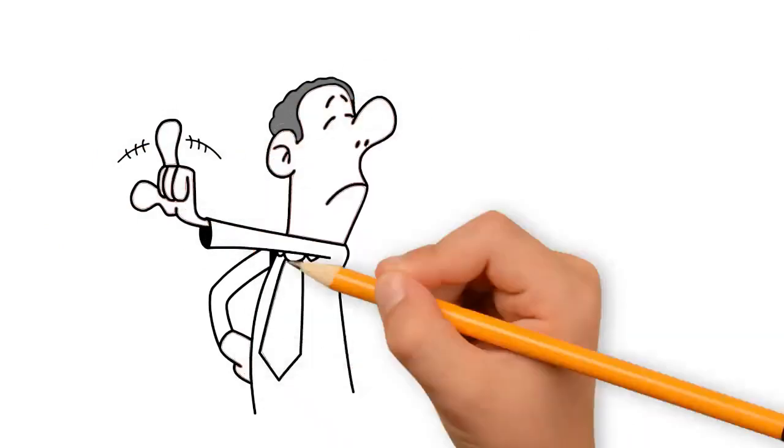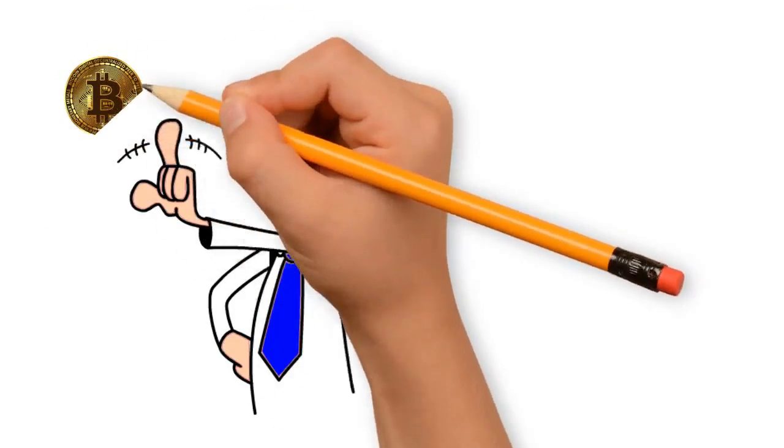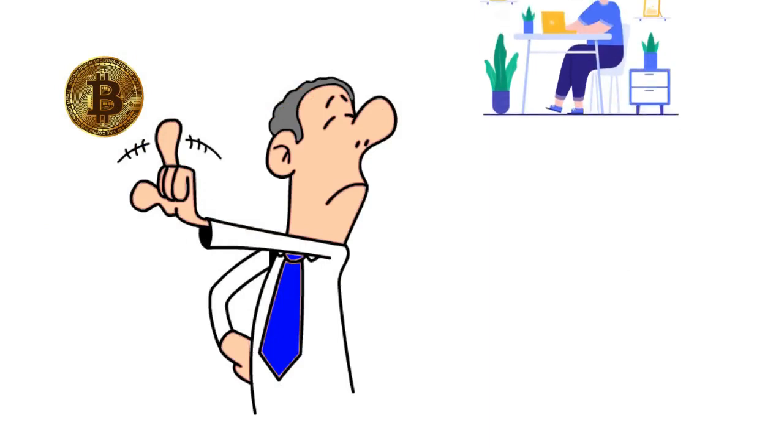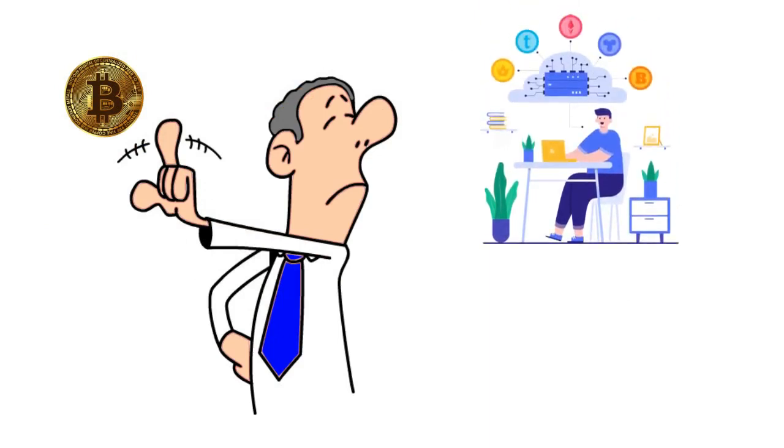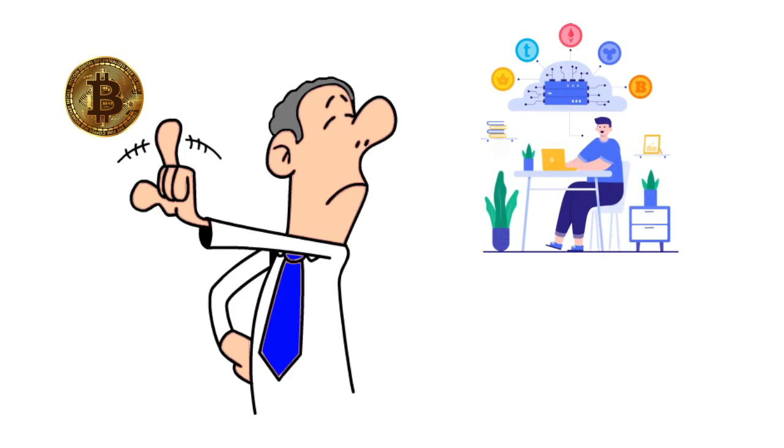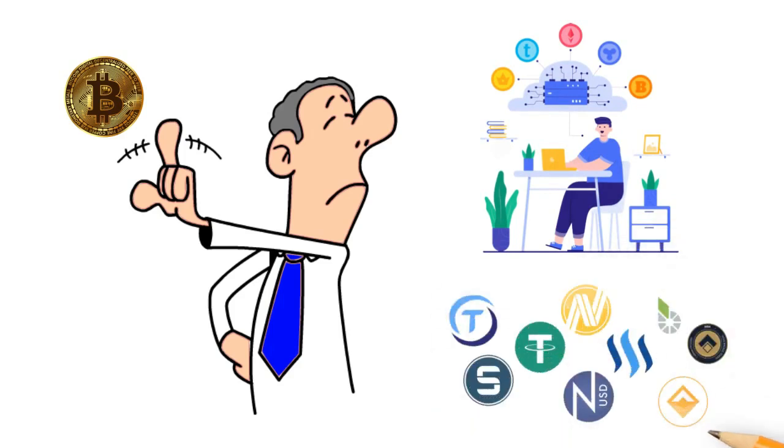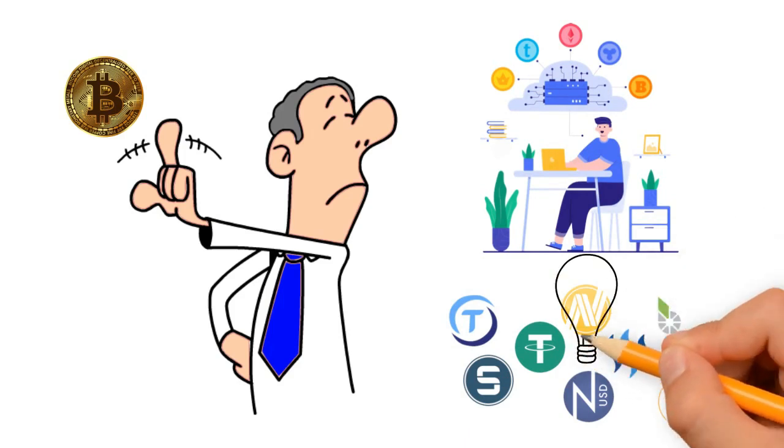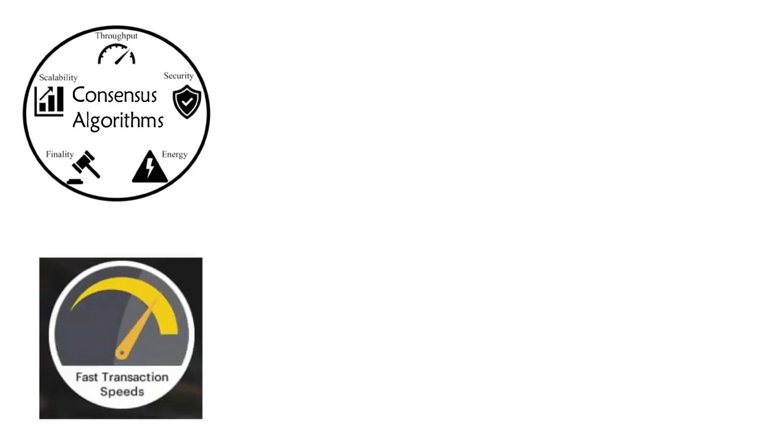In essence, altcoins mean all other cryptocurrency coins barring Bitcoin. Though the cryptocurrency era started not very early, many altcoins have been developed so far. The rationale behind altcoins was to have a different token that brought something new to the table compared to the pioneer, Bitcoin.